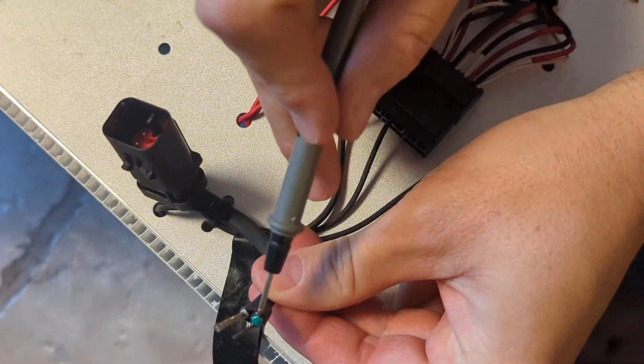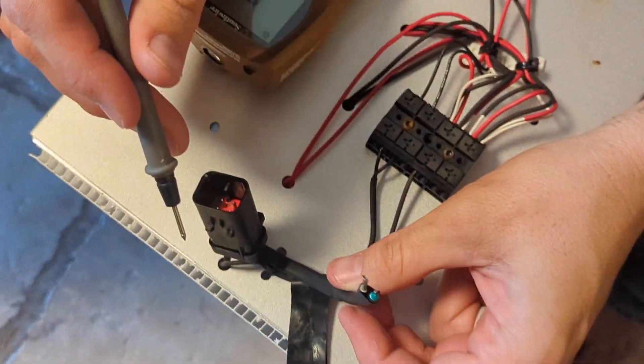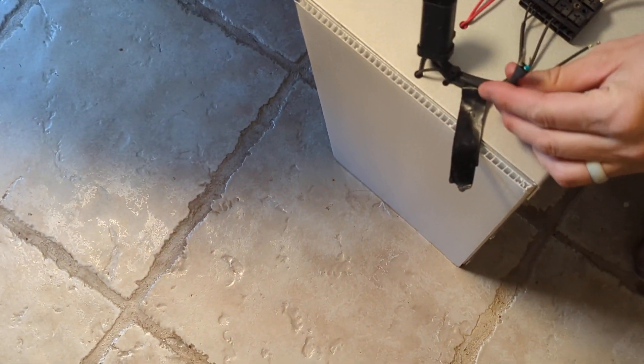So the solution is either to find exactly the same fuse and put it on there, solder it. The easiest thing to do is going to be just to replace it, but that was the solution that I found.